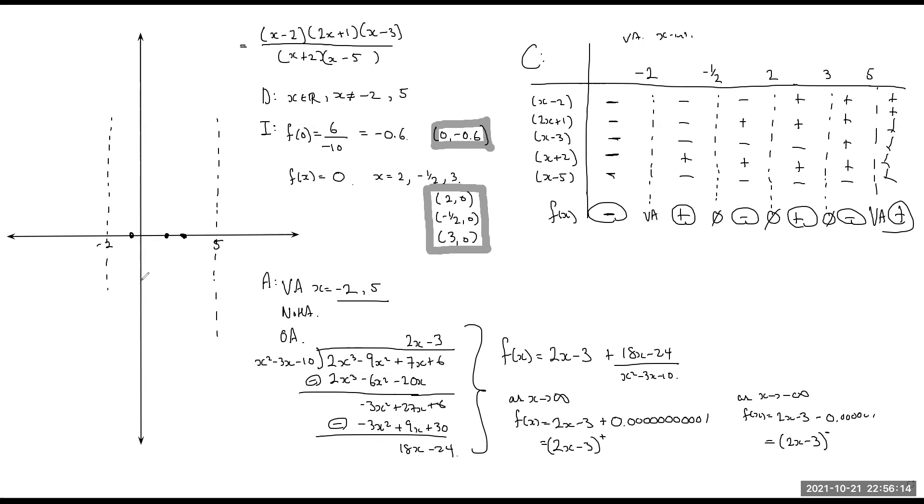So let me use a different color. Minus 3 will be around here. And my slope is a 2, so 1, 2, 1, 1, 2, 1. So it's going to look something like this.